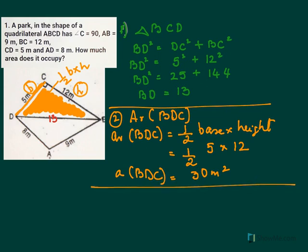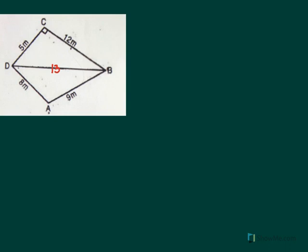Now next, we need to find area of this part. That is ABD. Now however, this part, it is not a right angle triangle. So we are going to use Heron's formula to find the area of the second part. Now to find the area of the second triangle, that is triangle ABD, we are going to use Heron's formula.